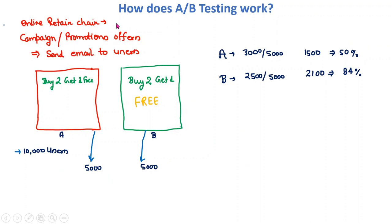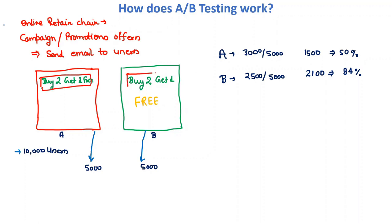Let's look at how A/B testing works. Say you are running an online retail chain and the next month is a festival season, so you want to run a promotional campaign by sending emails to different users. You ask your web team to create emails with different versions. Email A and Email B have the same content except: email A's subject says 'Free — Buy 2 Get 1 Free,' while email B's subject says only 'Buy 2 Get 1.'